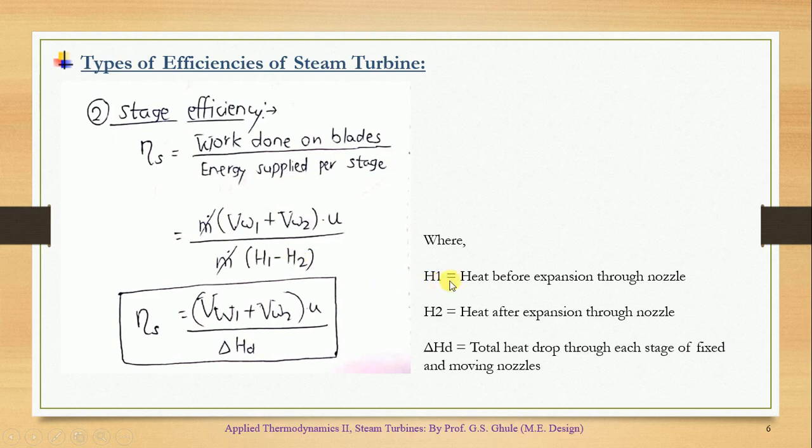Now what is this H1 and H2? If you can see over here, H1 is the heat before expansion through the nozzle and H2 is heat after expansion through the nozzle. The difference of this H1 and H2 is given by delta Hd, which is nothing but total heat drawn. So this is the formula for energy supplied per stage.